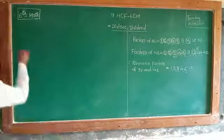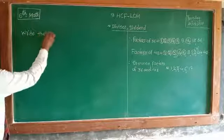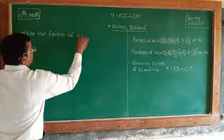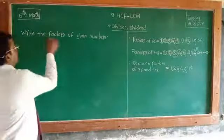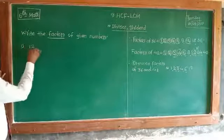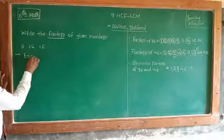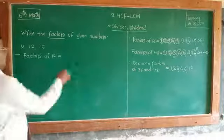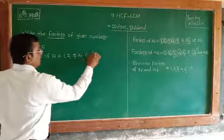Write the factors of the given numbers. The factors of 12 are: 1, 2, 3, 4, 6, and 12.